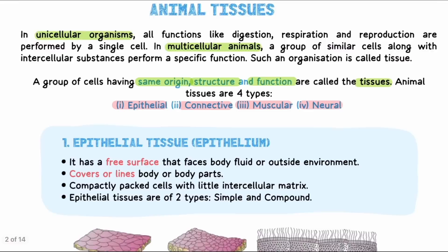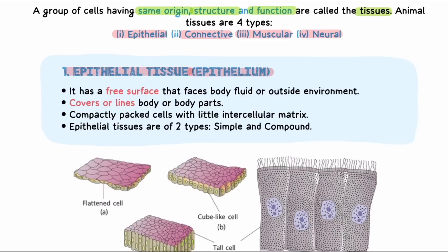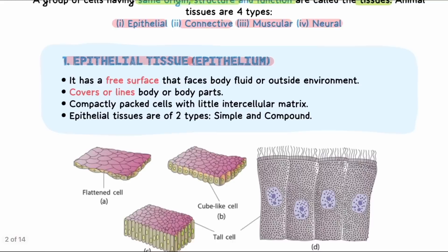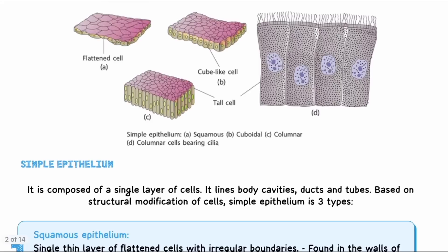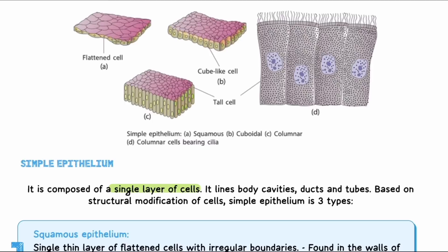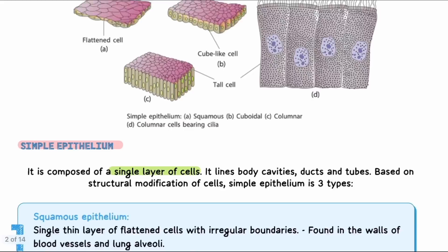We will start with epithelial tissues. Epithelial tissues are present on free surfaces or outside the environment — they line body parts. These cells are very compactly packed and the intercellular matrix is very low. There are two types: simple epithelial tissues (single layer of cells) and compound epithelial tissues (more than one layer of cells).